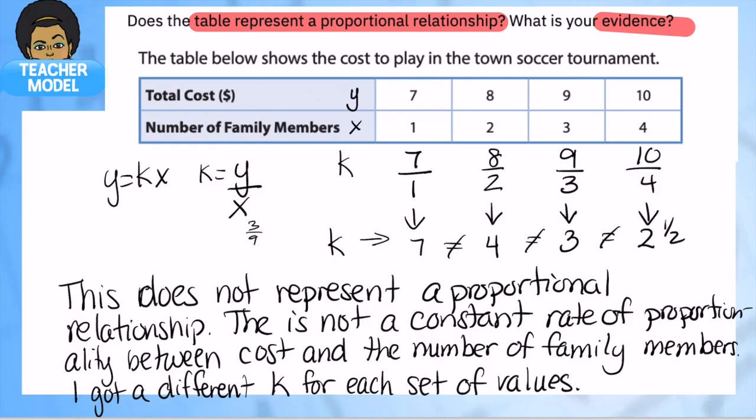Hit pause, you can jot this down. And now you know how to find constant rate of proportionality on a table, the same way you would on a graph.